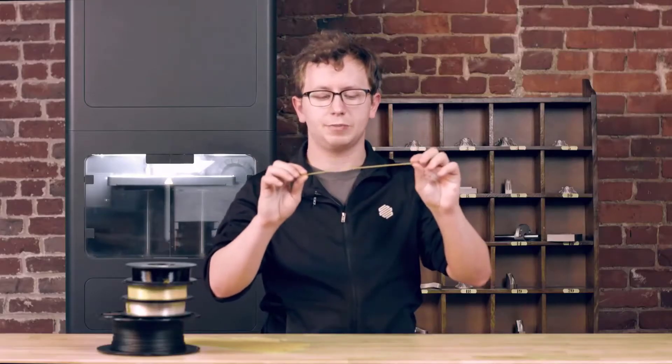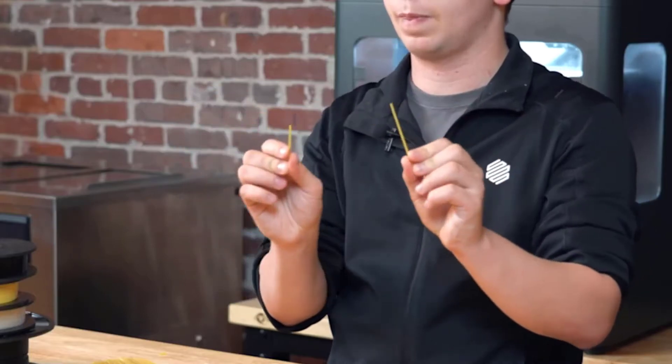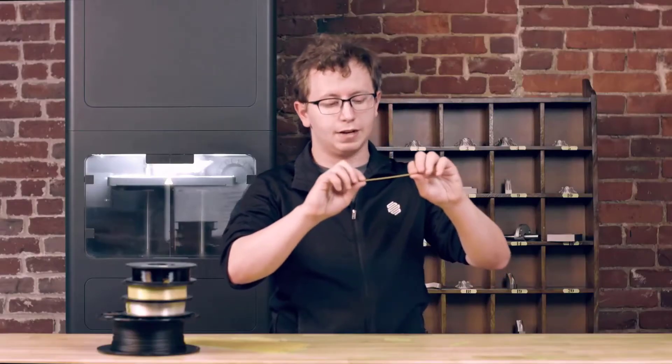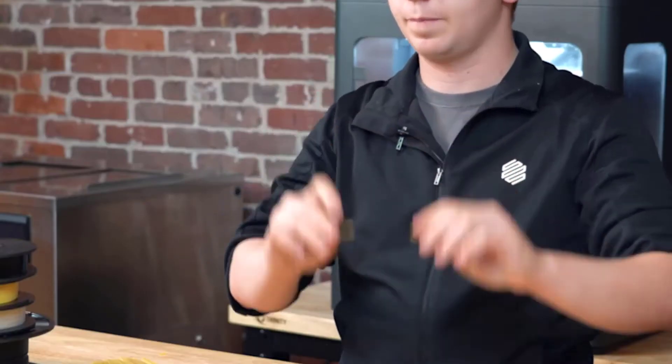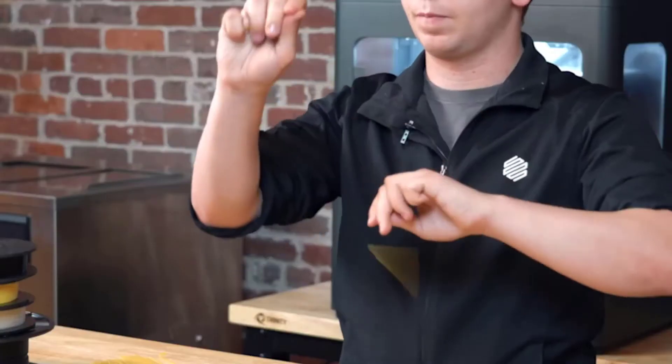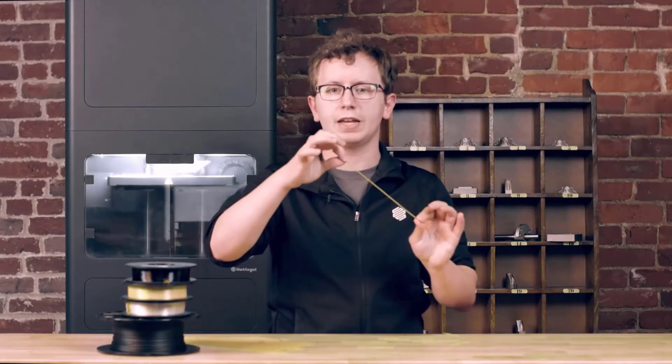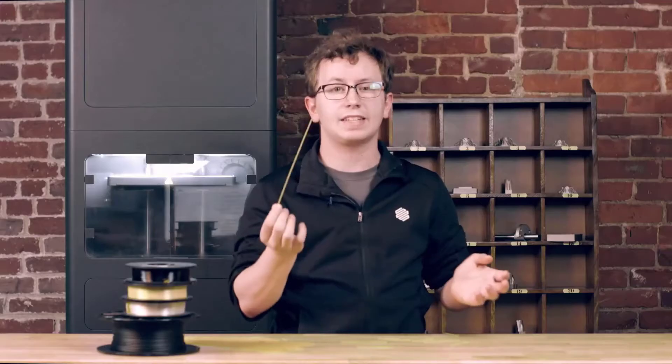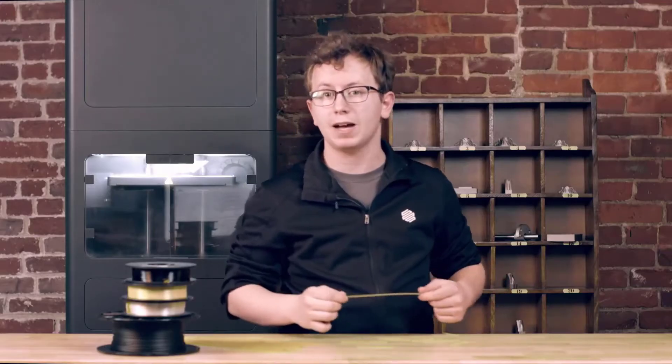Alone, they sort of behave like raw spaghetti. You can easily break a piece of spaghetti by bending it, by compressing it, or by shearing it. But it takes a lot more force to break a strand of spaghetti in tension by pulling on it. And that's how fibers are most often used in composites.